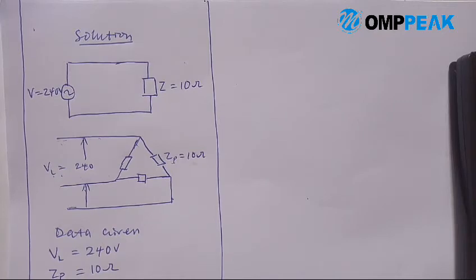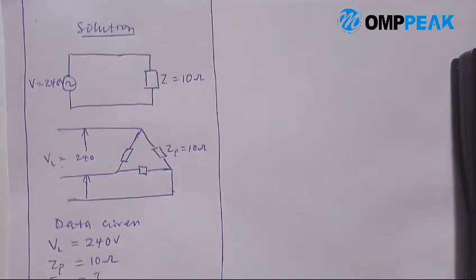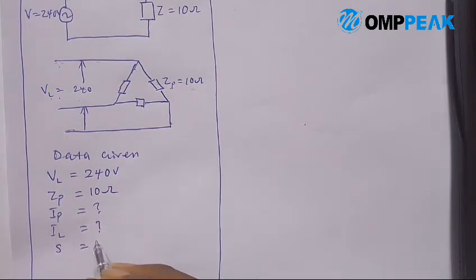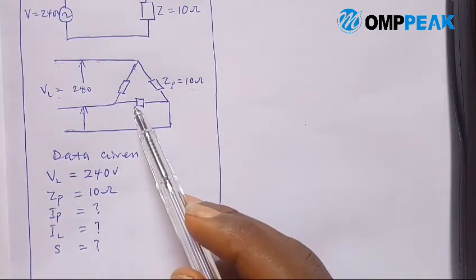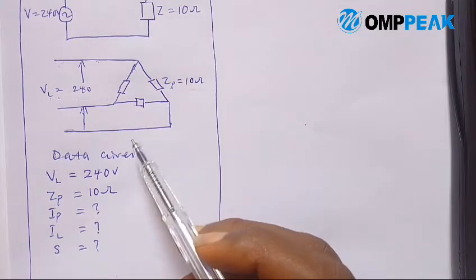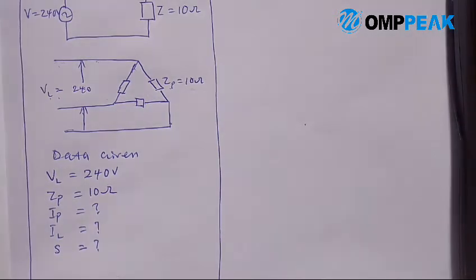We are to calculate the phase current, the line current, and the apparent power of the load. But before we get the phase current, let's determine the phase voltage first. Note: this is a delta connected load. In a delta connected system, the phase voltage is the same as the line voltage.